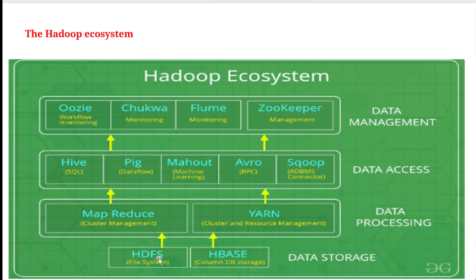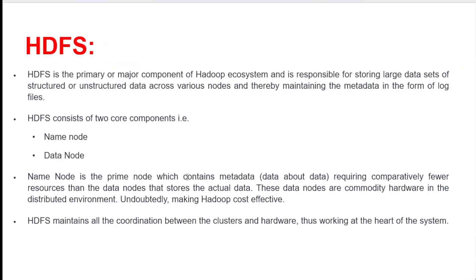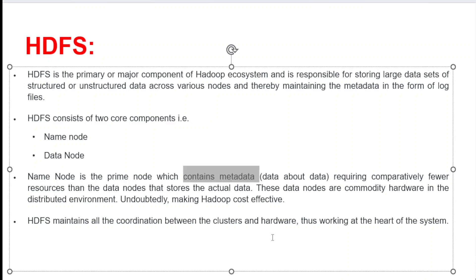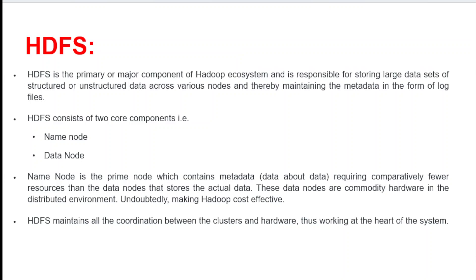First is HDFS, the basic and important component in the Hadoop ecosystem. We use it to store large amounts of data sets — not only structured format data but unstructured format data as well. It consists of two components: the Name Node, which stores only the metadata information, and the Data Node, which stores the actual data. Data nodes are commodity hardware in a distributed environment, making Hadoop cost-effective.